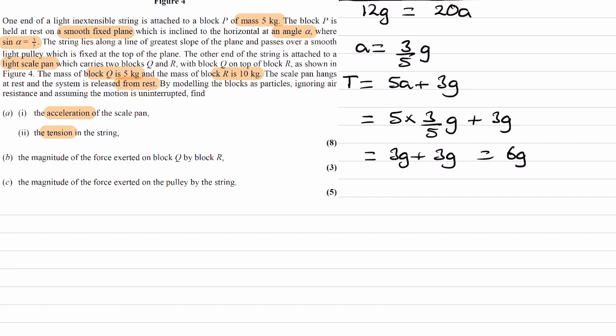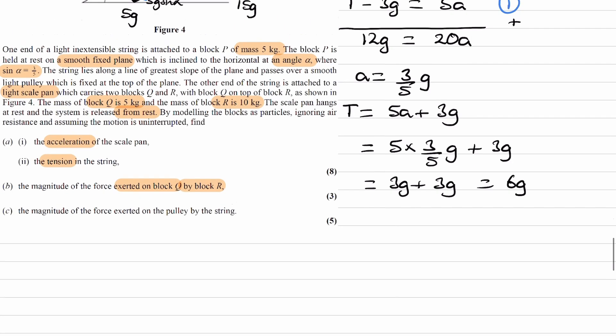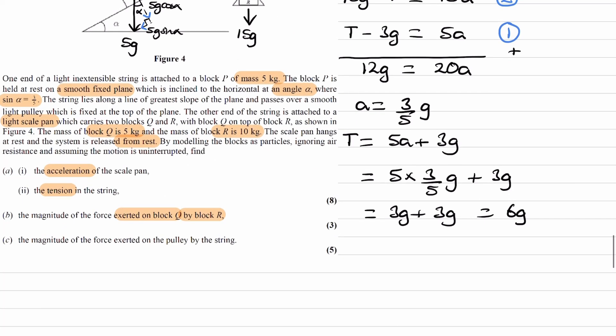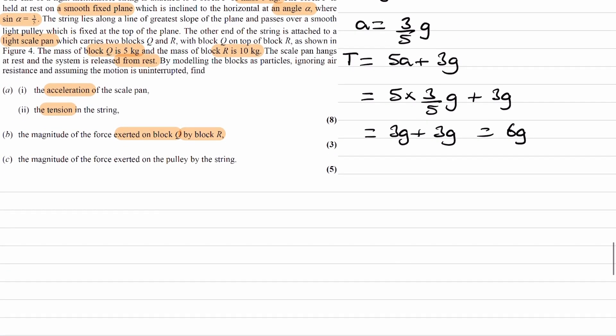And for part B, we want to find the magnitude of the force exerted on block Q by block R. Okay, so let's have a look at our diagram. This is the scale pan over here with the two masses Q and R. So, Q sits on top of R. We're trying to find that upward force that R exerts on to Q. So, that contact force. So, let's do that by considering the two objects separately. We'll consider forces that both of those objects experience individually. And then we'll think about what the easiest way to work out that force that R exerts on Q would be.